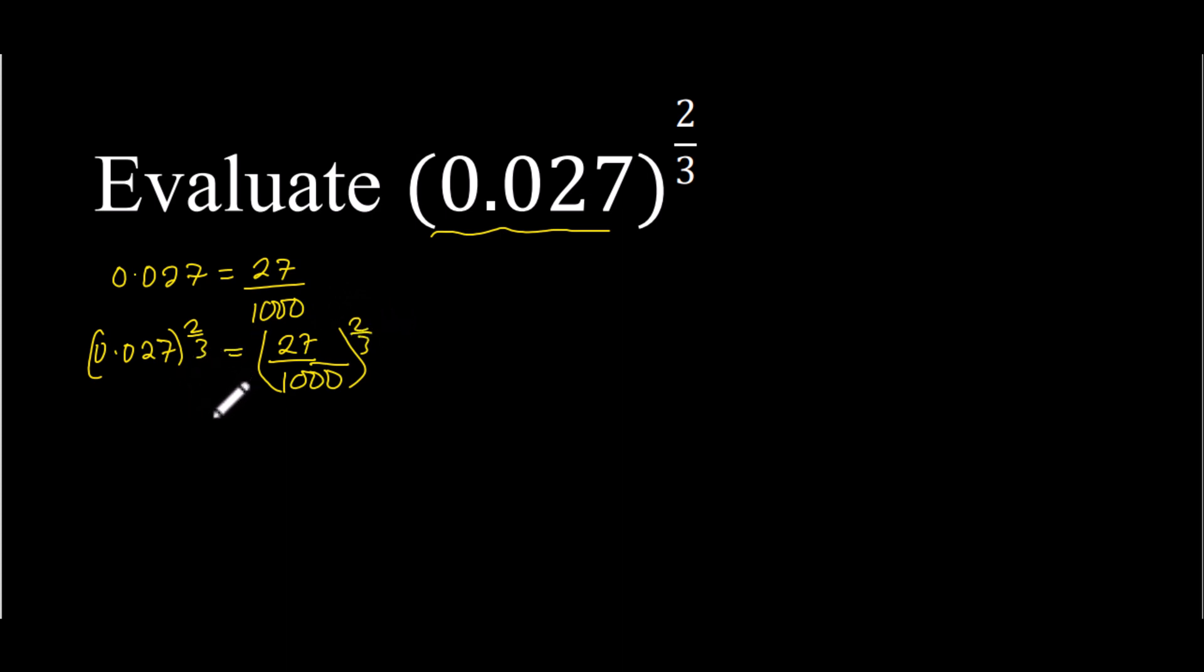And so this is the same as 27 in terms of exponents is 3 to the power of 3, divided by 1000 in exponential form is 10 to the power of 3, and all these raised to the power of 2/3.